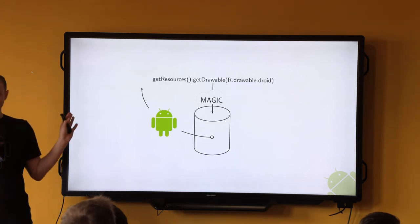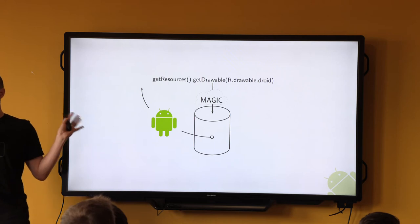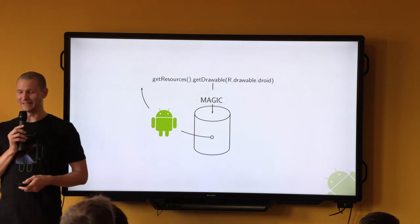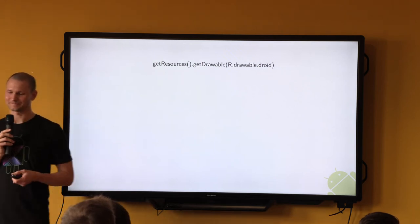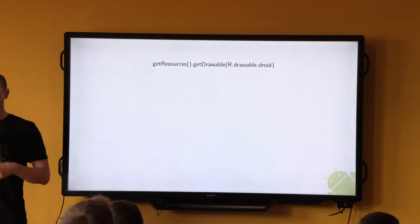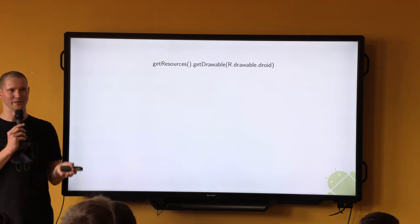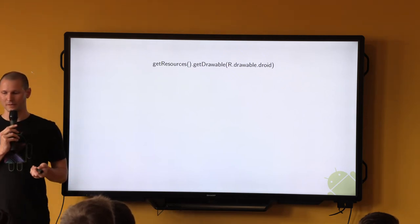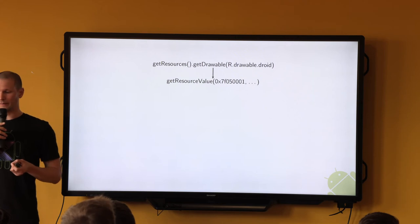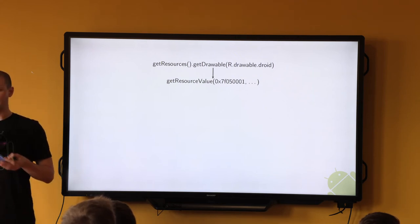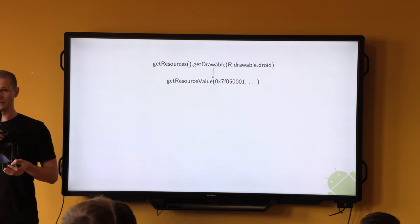We're finally ready to deep dive into the magic cloud. First you obtain a resources object and call one of its get methods. Regardless of which method you call, you will end up in the internal method getResourceValue.